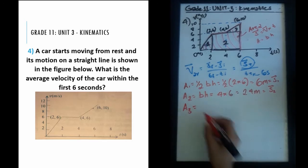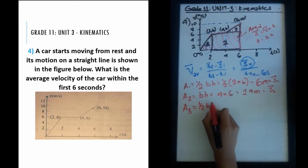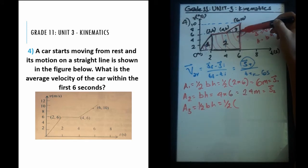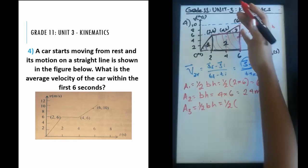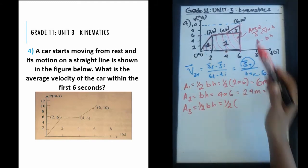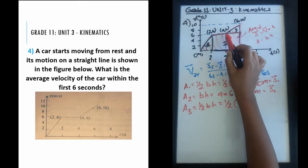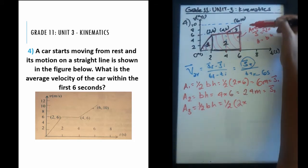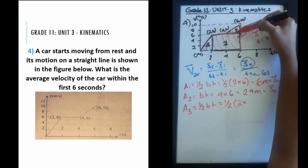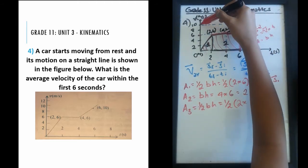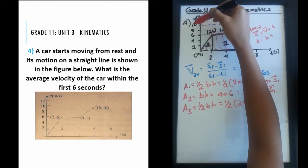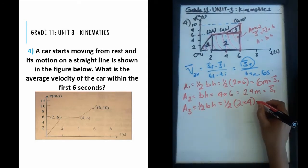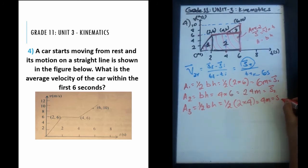Finally, area three is again a triangle: half base times height. The base runs from four to six seconds — six minus four gives a length of two. The height runs from six to ten meters per second — ten minus six gives a height of four. So one half times two times four: eight divided by two equals four meters. That's our third displacement.